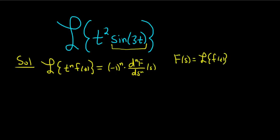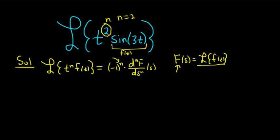So if you have t to a power times something you can take the Laplace of, this is a good strategy. In this problem, little f of t is sine of 3t. So all we have to do is compute the Laplace of little f — that's going to be big F. And n here is 2. So we've got to take the derivative two times and then plug in 2 to this formula. Let's do it.